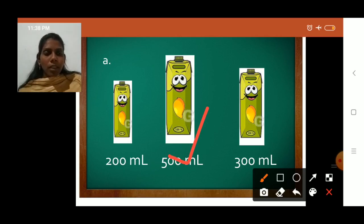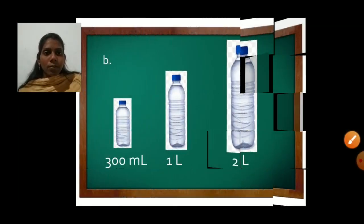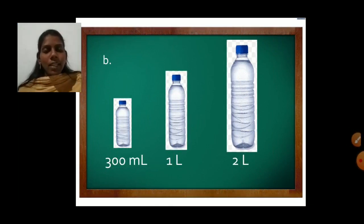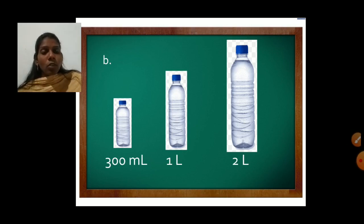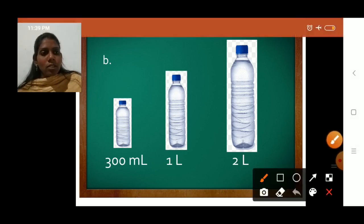Next, for part B, water bottles are given: one is 300 ml, one is one liter, and one is two liters. Which water bottle has more capacity? Two liters. So you will take the two-liter water bottle.